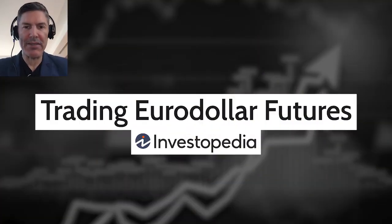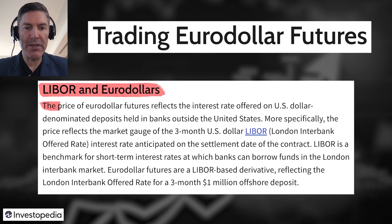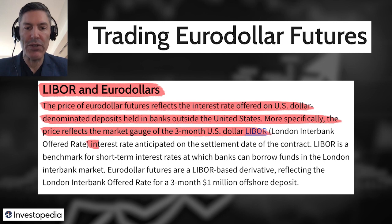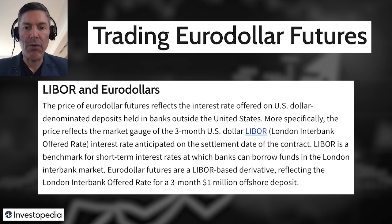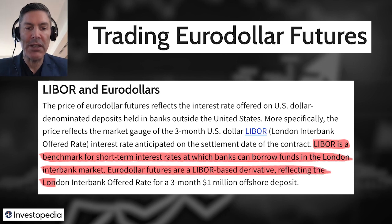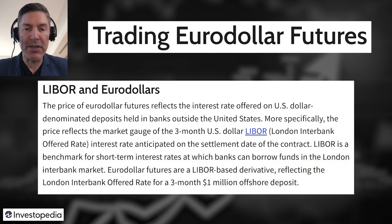This is from one of my favorite websites, Investopedia. It says LIBOR and euro-dollars: the price of euro-dollar futures reflects the interest rate offered on U.S. dollar-denominated deposits held in banks outside of the United States. More specifically, the price reflects the market gauge of the three-month U.S. dollar LIBOR interest rate anticipated on the settlement date of the contract. LIBOR is an abbreviation for London Interbank Offered Rate — a benchmark for short-term interest rates at which banks can borrow funds in the London Interbank market.